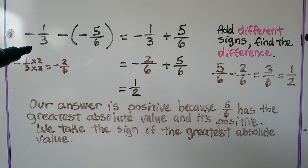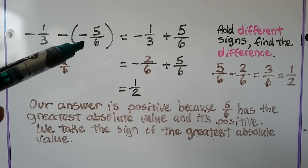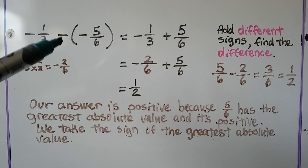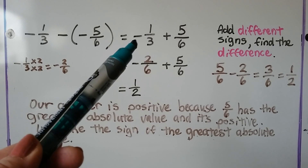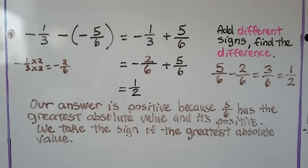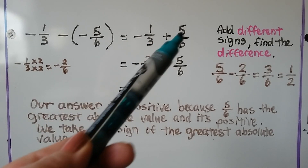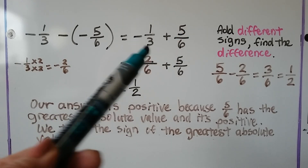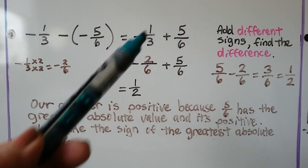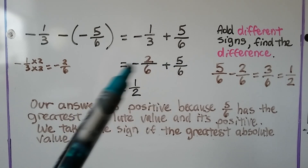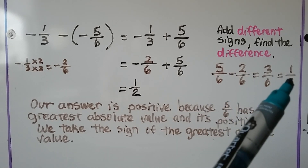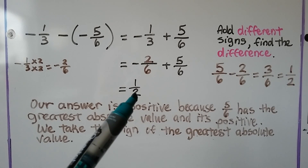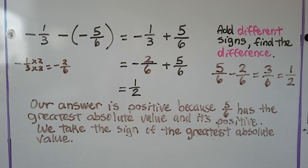If we have negative 1/3 minus negative 5/6, we're going to add the opposite. This turns into a plus sign, and the opposite of negative 5/6 is positive 5/6. So we have negative 1/3 plus 5/6. We have different signs, so we're going to find the difference. They need common denominators — 1/3 is the same as 2/6. So to find the difference, we subtract: 5/6 minus 2/6 is 3/6. That's 1 half. Our answer is one half.